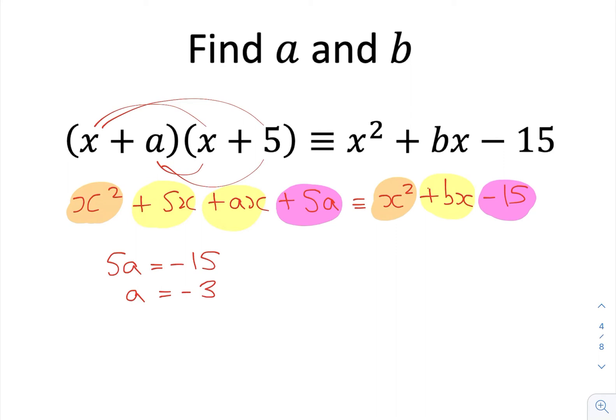And now I know that what I can do is put this back into this expression here. So now where I had 5x plus ax equals bx earlier, I'm now going to have 5x subtract 3x equals bx. And therefore, by inspection, we can see 5x take 3x will give me 2x. 2x is equal to bx. And therefore, b is going to be 2.